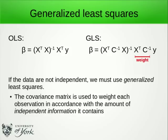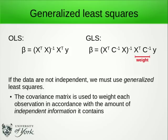When observations are not independent, instead of ordinary least squares we have to use generalized least squares. In ordinary least squares, calculating a constant fit means x is a vector of ones, so we sum the data and divide by n. In generalized least squares, there is an extra term — the inverse of the variance-covariance matrix of observations — which becomes a weight applied to each observation. Instead of an unweighted average, we're now calculating a weighted average. The inverse of the variance-covariance matrix is related to the information matrix, so it weights each observation in accordance with the amount of independent information it contains.